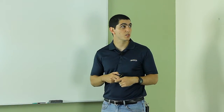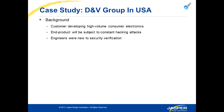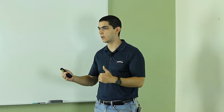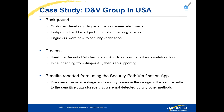This technology was used by one of Jasper's customers. They were developing high-volume consumer electronics that would be the target of constant attacks by hackers, and they had engineers who were new to security verification. The engineers used Jasper's Security Path Verification App to cross-check results from their existing simulation flow. Initially Jasper helped those engineers ramp up on security verification, but after a few months they were pretty much self-supporting. The key benefit was that they found several leakage and sanctity issues not detected by structural analysis or simulation — and some of those issues were critical and could have been exploited by hackers.